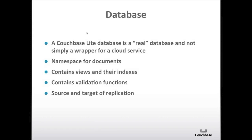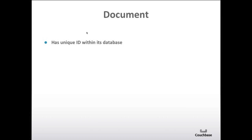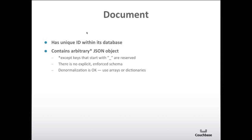Databases also serve as the source and target of a replication, and we'll get into replications later. A document has a unique ID within the database. It can contain an arbitrary JSON object — the only restriction is that you can't have a key that starts with an underscore. There's no enforced schema. You can have any sort of schema you want and it can be arbitrarily nested, so you can have a dictionary with a field that has a list, and each list item is a dictionary, all the way down.